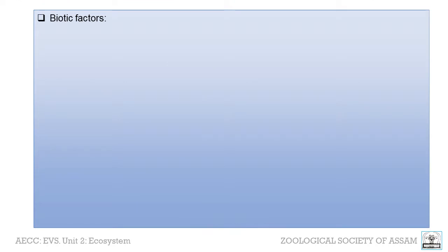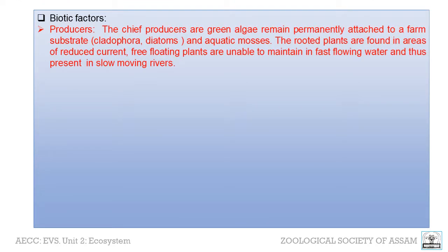Now let us come to the biotic factors. Producers: the chief producers that remain permanently attached to a firm substrate are attached green algae such as Cladophora, diatoms, and sometimes aquatic mosses. The rooted plants are found in areas of reduced water current where sediment is found. Free-floating plants are unable to maintain large populations in fast-flowing water and are therefore present in large numbers in slow-moving rivers.